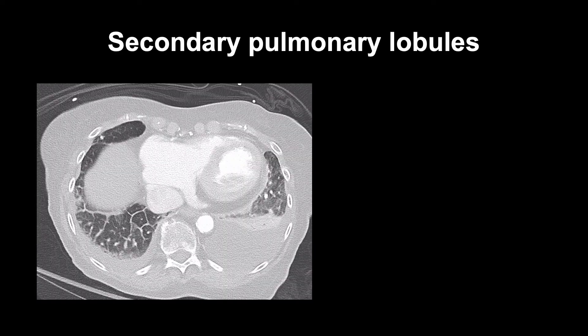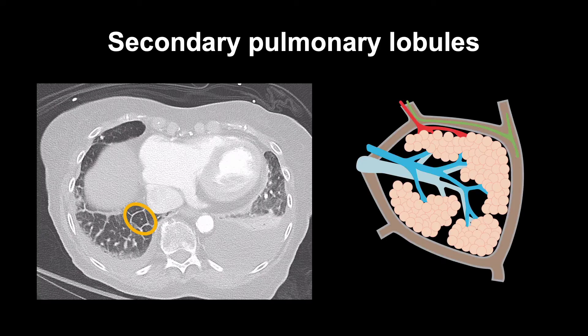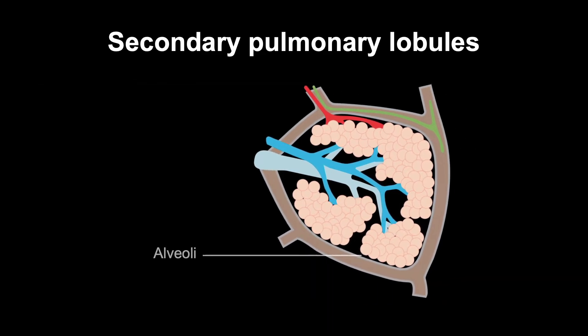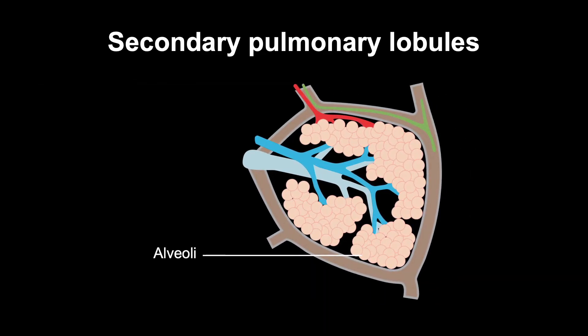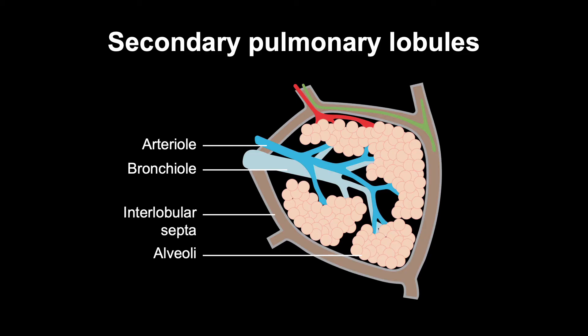A key anatomic feature of the lung that determines how lung pathology appears on CT is the secondary pulmonary lobule. As the airways move from the hila out to the periphery, they change from conducting airways to respiratory airways, and ultimately to acini and alveoli. The lung is organized into secondary pulmonary lobules — 1 to 2.5 cm polyhedral structures, each supplied by a small bronchiole and a pulmonary arteriole, and bounded by connective tissue forming interlobular septa. These septa contain draining venules and lymphatics.